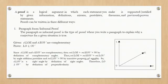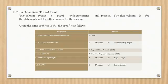And since the measurement of angle LOV equals 90 degrees by the transitive property of equality, angle LOV is a right angle by the definition of right angles. Therefore, LO is perpendicular to OV by the definition of perpendicularity. The second form is known as the two-column or formal proof, which has statements and reasons.